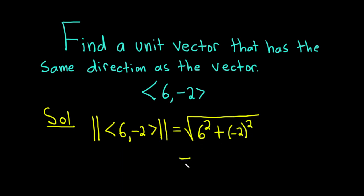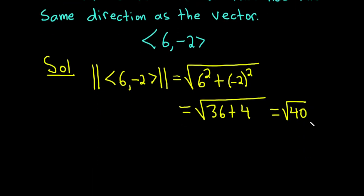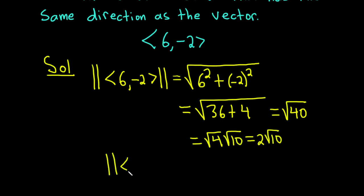6 squared is 36, and negative 2 squared is 4. So we have the square root of 36 plus 4, which is the square root of 40. We can simplify: the square root of 40 equals the square root of 4 times the square root of 10, which equals 2 square root of 10. So the magnitude of the vector (6, −2) is 2√10.